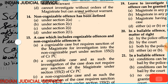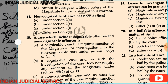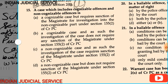Question 14: Non-cognizable offense has been defined under which section of CrPC? The options are Section 2(a), Section 2(c), Section 2(i), or Section 2(l). Option D is correct — non-cognizable offense is defined under Section 2(l) of CrPC.